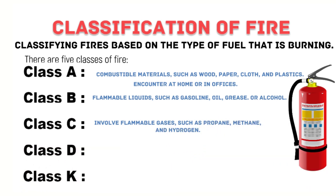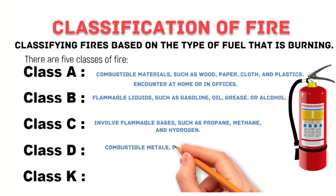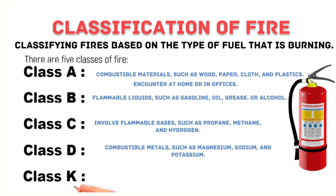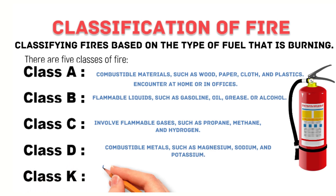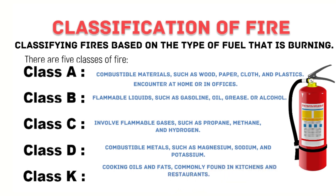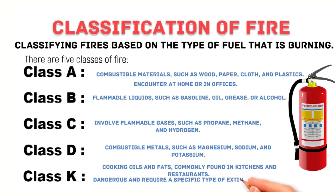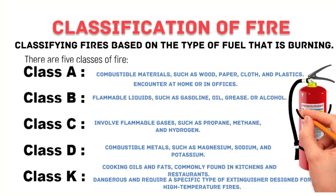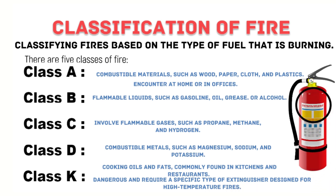Class D fires are fires that involve combustible metals such as magnesium, sodium, and potassium. Class K fires involve cooking oils and fats commonly found in kitchens and restaurants. These fires are particularly dangerous and require a specific type of extinguisher designed for high-temperature fires.